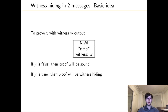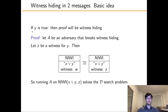Now there are two cases. If Y is false, then by a disjunctive syllogism we know the proof is sound. On the other hand, if Y is true, then we can show the proof is witness hiding. The proof is simple: let Z be a witness for Y. Using non-uniformity, we can hardcode Z into the code of the adversary. Then, instead of using the proof generated with W, we can generate the proof using Z. Feeding this proof to the original adversary directly solves the D-search problem.